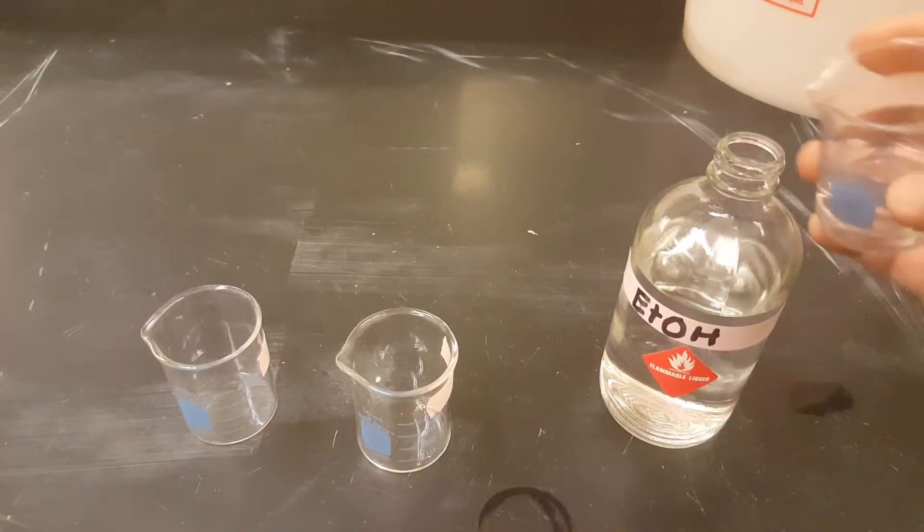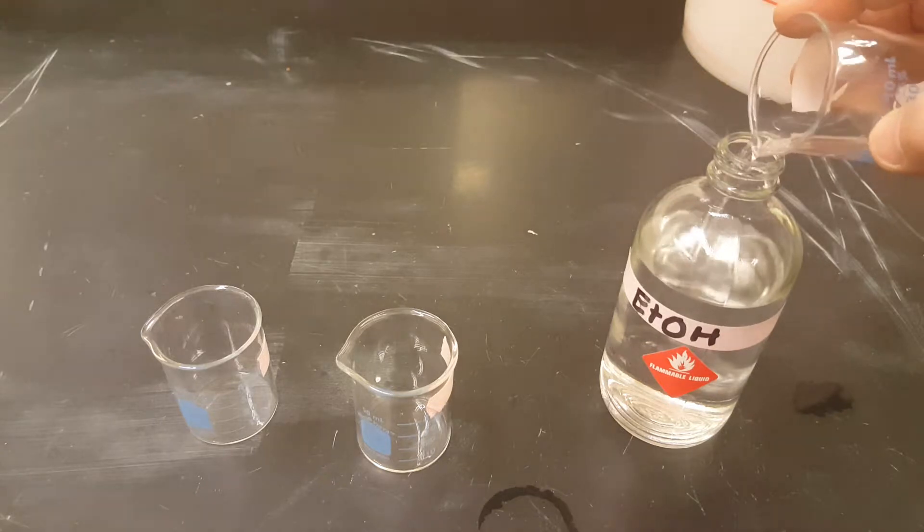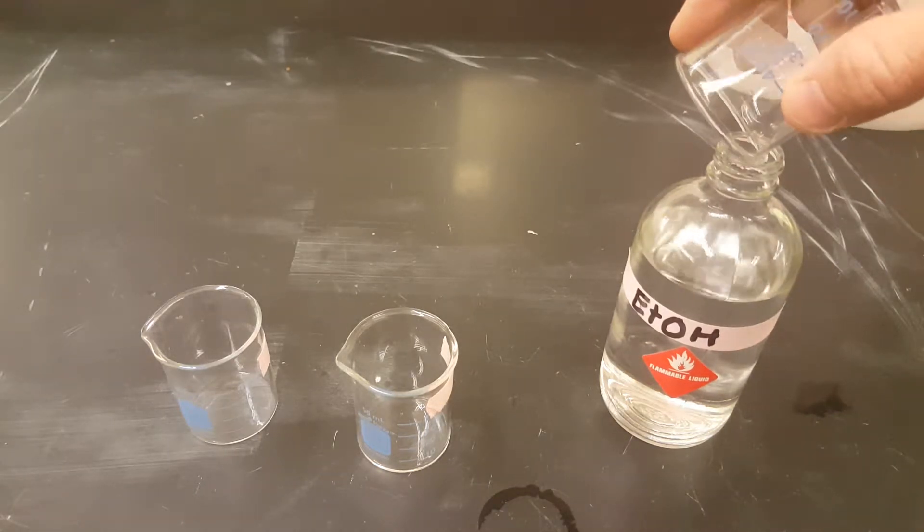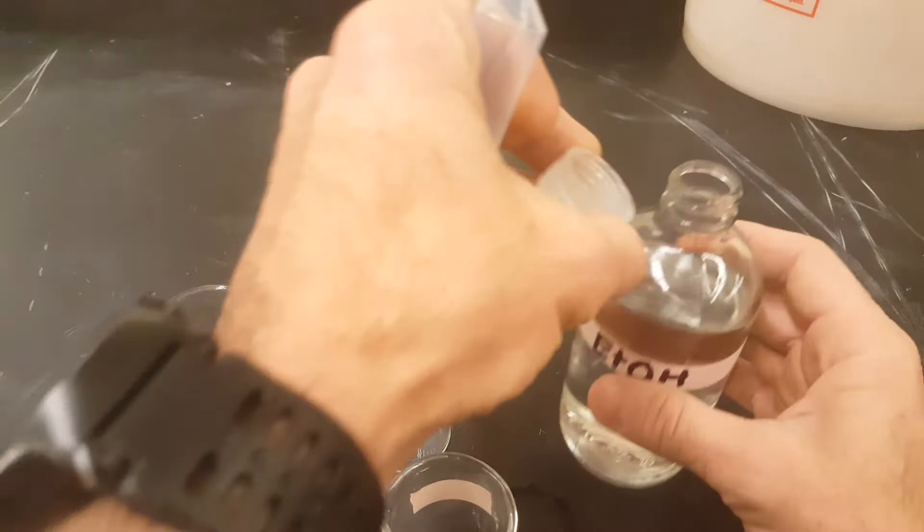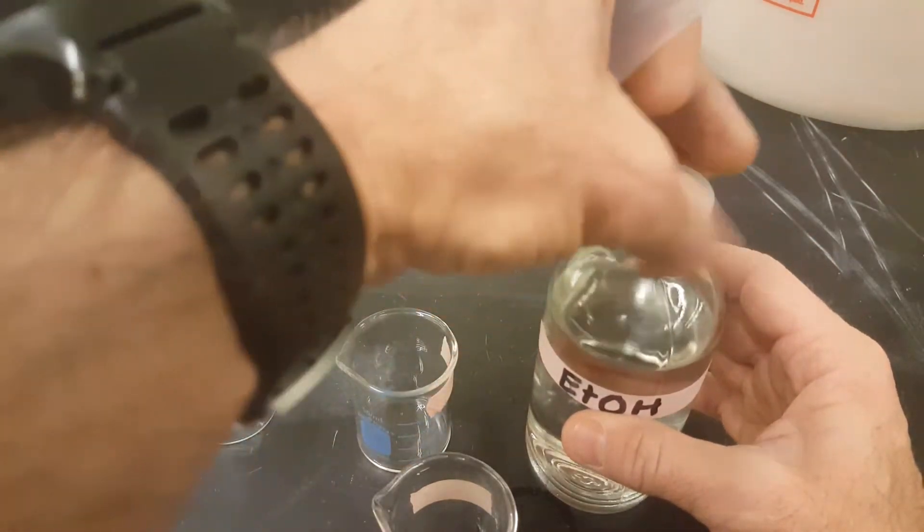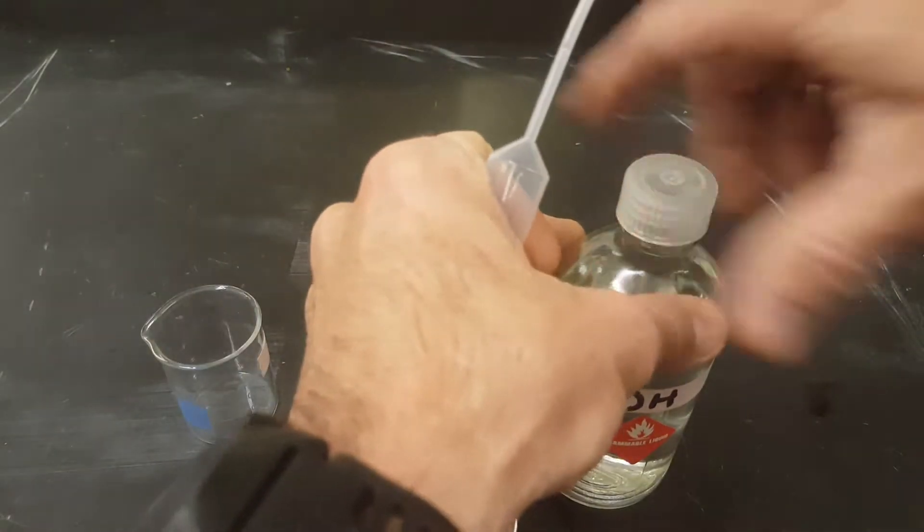When you're done at this station, like I just instructed you, pour everything back into the source bottle. Because it's so volatile, it'll evaporate so quickly, we don't want to waste any of it and put the top back on gracefully.